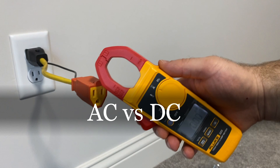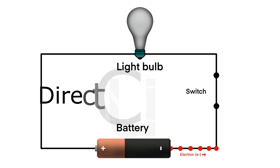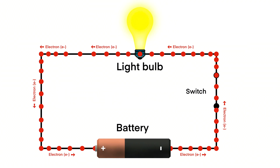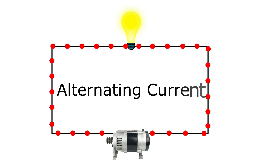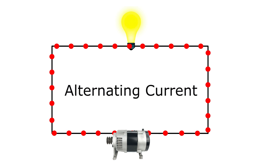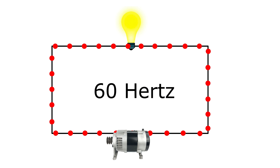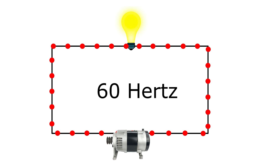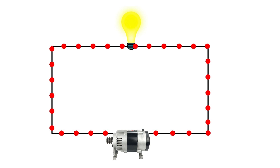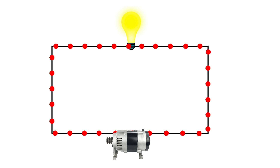Isn't all electricity the same? Well, no. DC is a flow of electricity that flows in only one direction — therefore it's called direct current. AC, on the other hand, stands for alternating current, meaning it changes direction a certain number of times per second. In the USA, the AC current in an electrical outlet changes direction 60 times per second — 60 hertz — meaning electricity flows 16.7 milliseconds in one direction and then 16.7 milliseconds in the other direction.